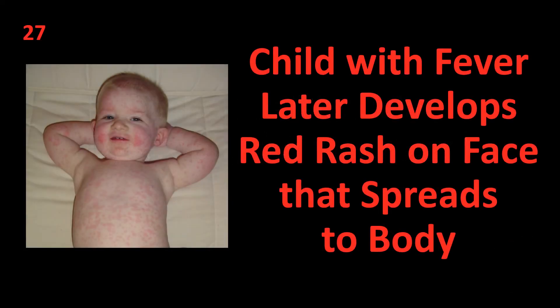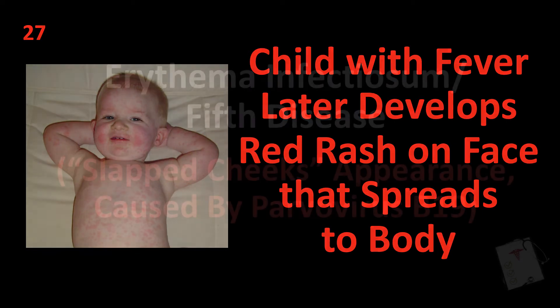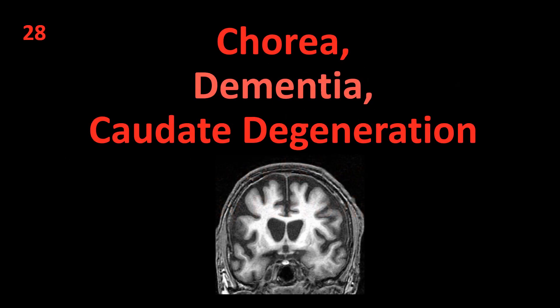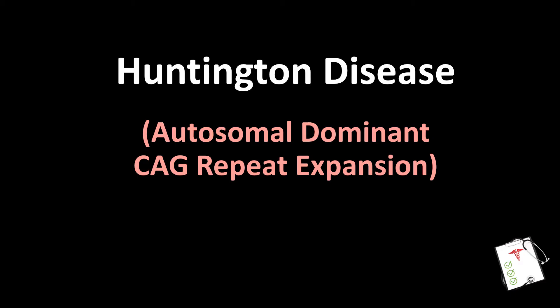Number 28: Child with fever later develops red rash on face that spreads to body. Answer: Erythema infectiosum — fifth disease, slapped-cheek appearance, caused by parvovirus B19. Number 29: Chorea, dementia, caudate degeneration. Answer: Huntington disease — autosomal dominant CAG repeat expansion.